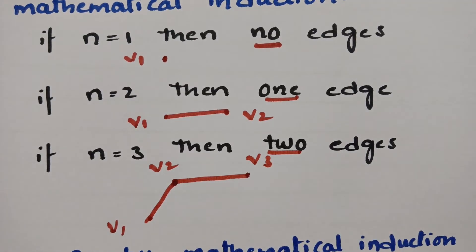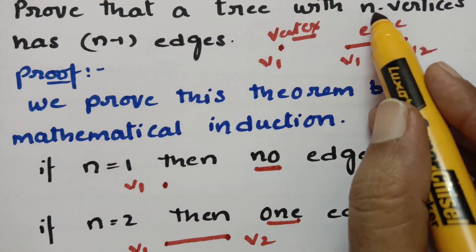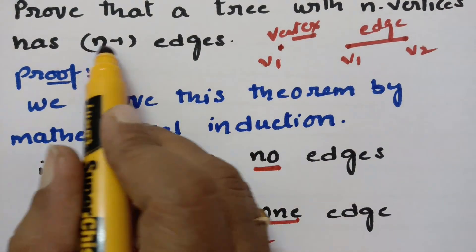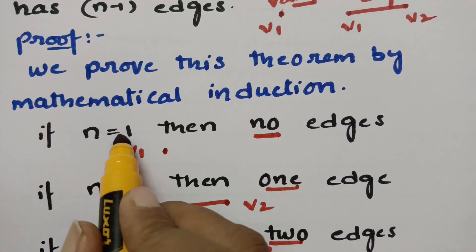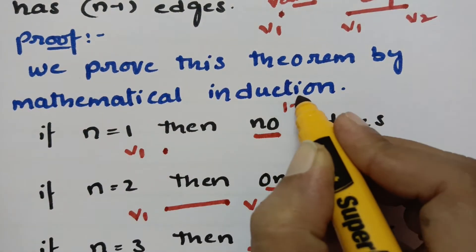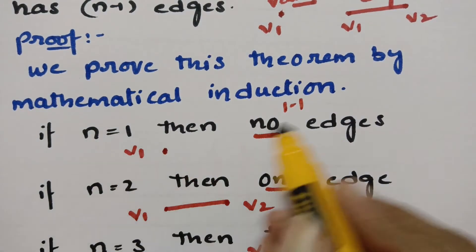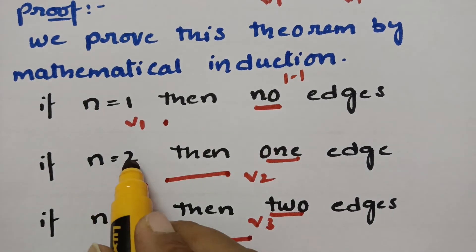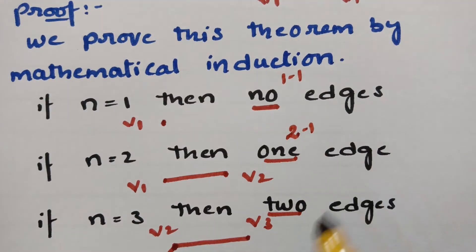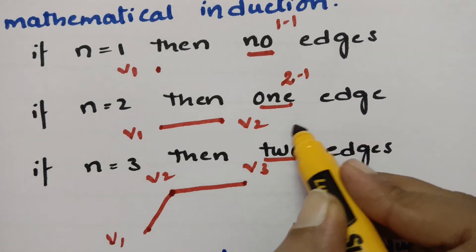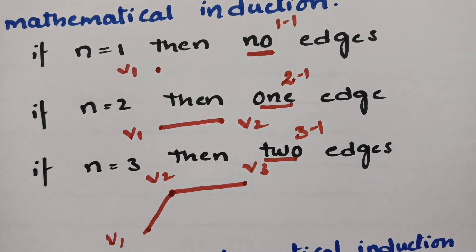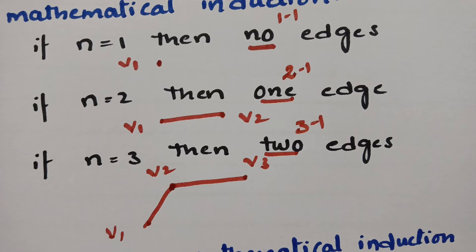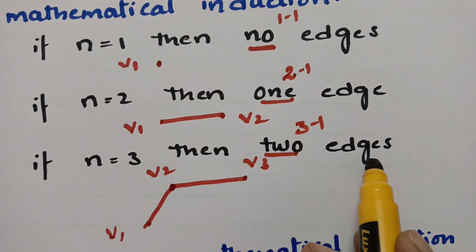If you observe carefully: if I have n vertices, this tree has n minus 1 edges. If n equals 1, then 1 minus 1 gives 0 edges — no edges. If n equals 2, then 2 minus 1 gives one edge. If n equals 3, then 3 minus 1 gives two edges. Similarly, if we keep taking n equal to 1, 2, 3, 4, and so on, we get n minus 1 edges.